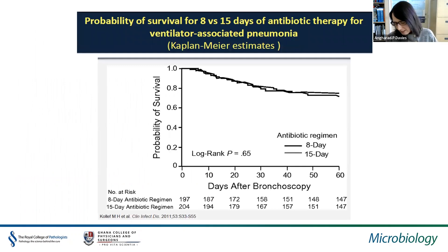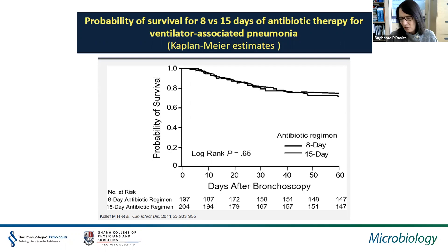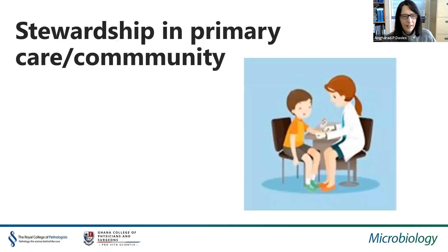Historically, we've been giving too-long courses of antibiotics. One study showed that for ventilator-associated pneumonia, 8 days and 15 days of treatment showed almost no difference in survival probability. We should be guided by the evidence on the necessary length of antibiotic courses and use shorter courses where supported by evidence.